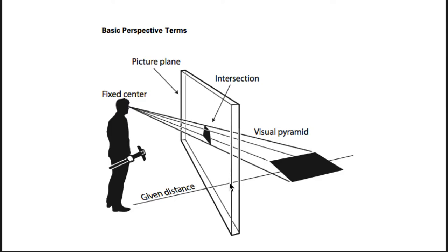I wanted to give a quick introduction to perspective - this isn't going to be too technical. Whenever you're drawing representationally, you're imagining that the picture you're drawing on - the paper or canvas - is the picture plane. There's always an imaginary viewer to keep in mind. When you're making the work it's you, but after you're done it's going to be somebody else. In traditional perspective it's a fixed viewpoint, and you're receiving just a slice of what you'd see on the other side of a window.